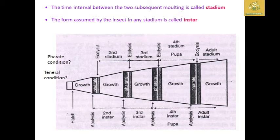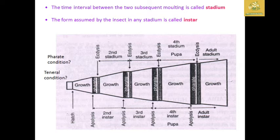After hatching from the egg or being born from adults, the insect grows and passes through successive instar stages. After each instar formation, the adult stadium is eventually formed. This is a continuous process where growth takes place until the insect attains its adult stage.